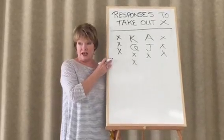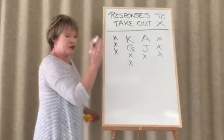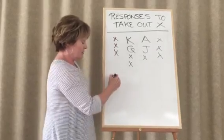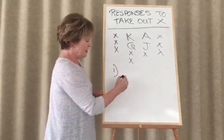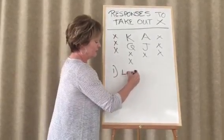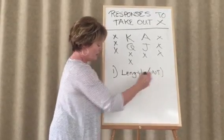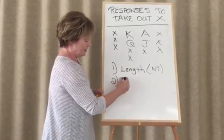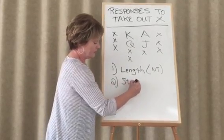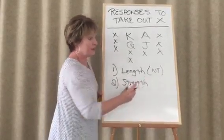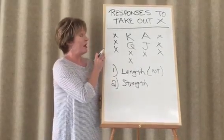The answer is yes. There are two things we show in a takeout double. The first thing we show is length. We bid our longest suit typically, unless we bid no trump. The second thing we show is strength.